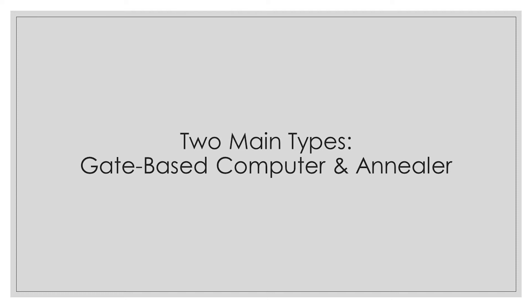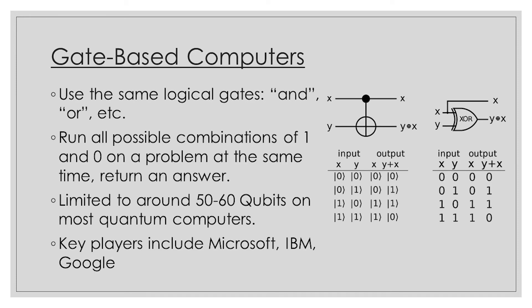Quantum computers can be generally divided into the following two categories: gate-based computers and quantum annealers. Let's start with gate-based quantum computers. These are the standard quantum computers.